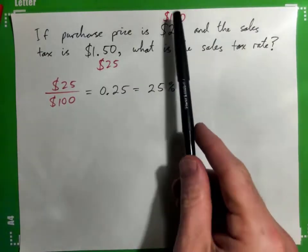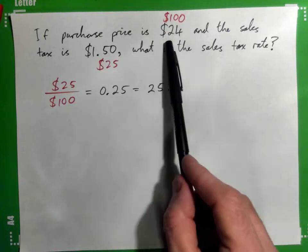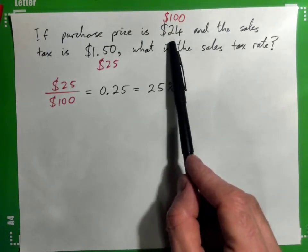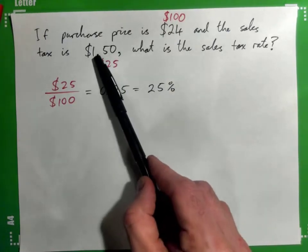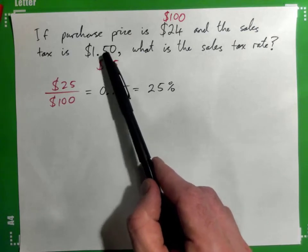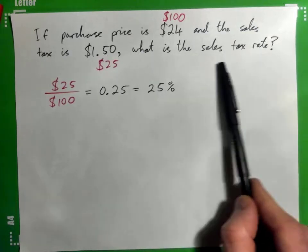So we don't have nice, easy numbers like that. We have $24 for a purchase price and $1.50 for the sales tax amount. So how do we figure out the sales tax rate in this case?